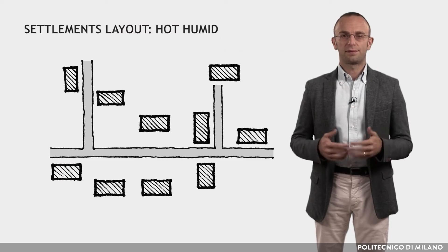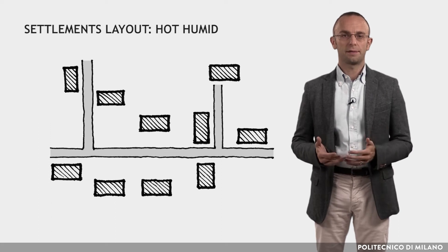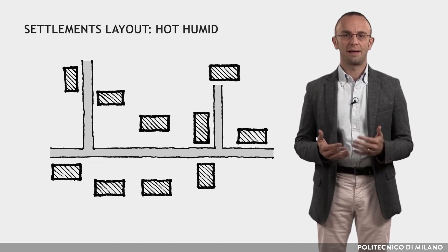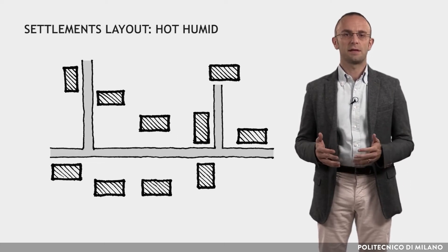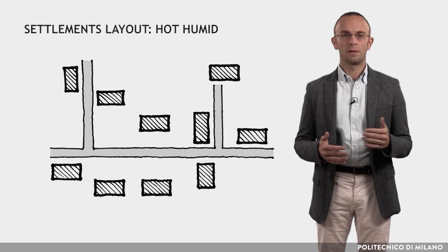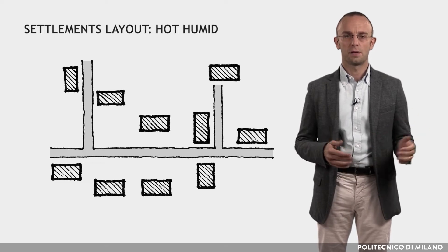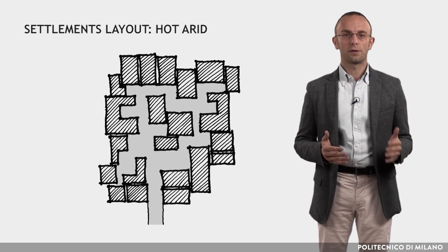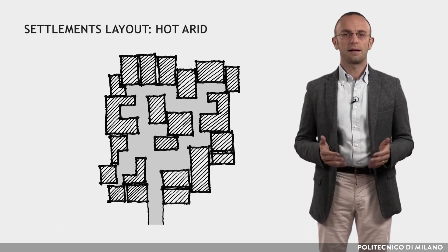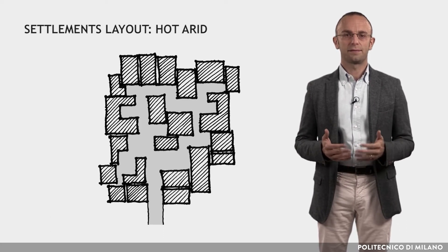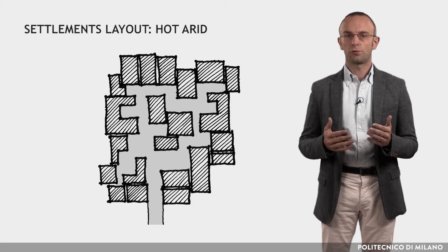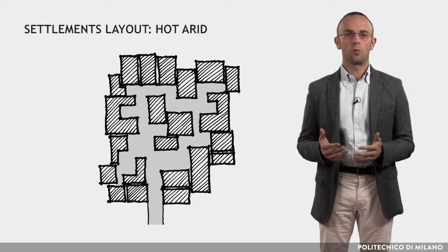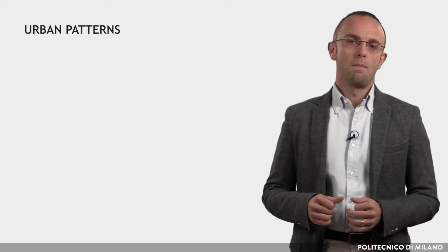For example, settlements in hot, humid areas are laid out to make maximum use of the prevailing breeze. Buildings are scattered, and vegetation is arranged to provide maximum shade without hampering natural ventilation. On the other hand, settlements in hot, arid climates are characterized by optimal protection against solar radiation through mutual shading, which leads to compact settlements, narrow streets and small squares shaded by tall vegetation.